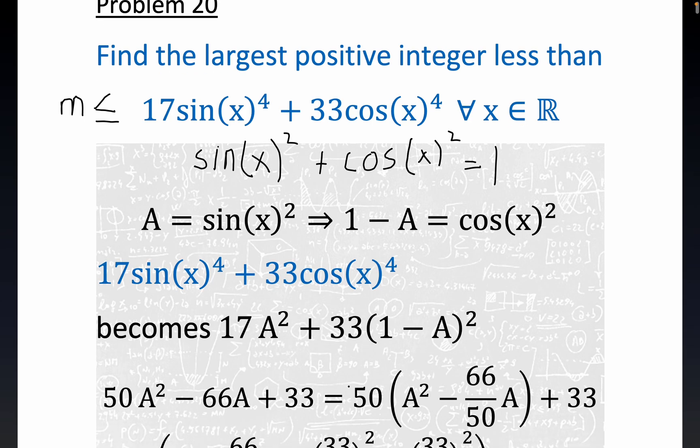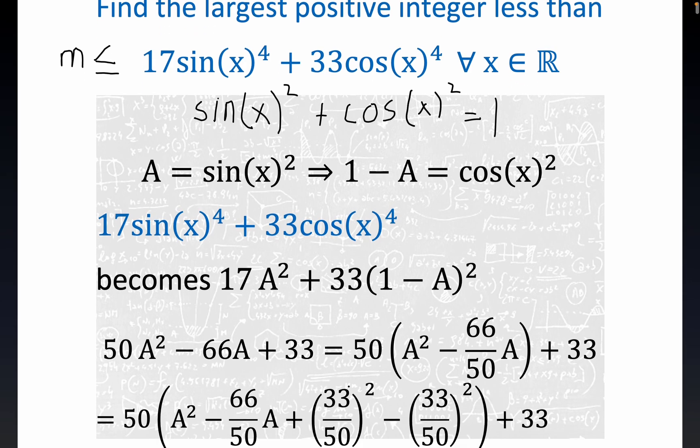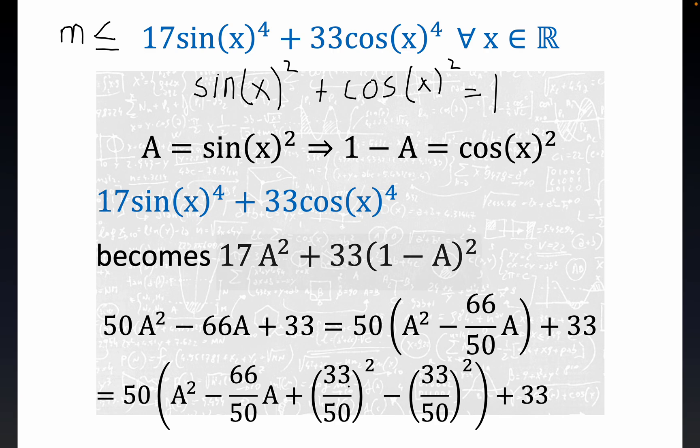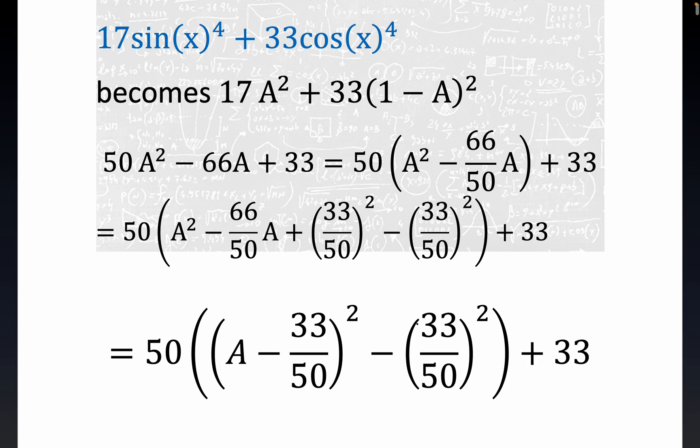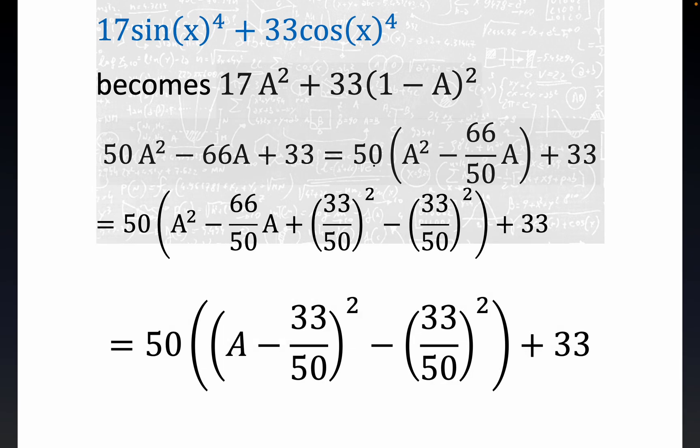Completing the square is a little nasty, but when you expand this out, this is what you end up with. And you know the standard drill about completing the square. You take half of the coefficient, and the half of the coefficient is just 33 over 50.